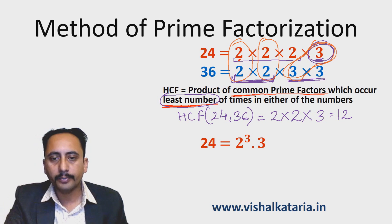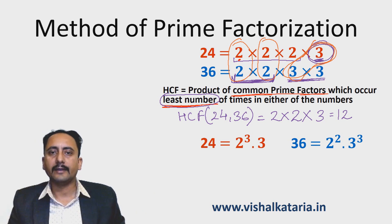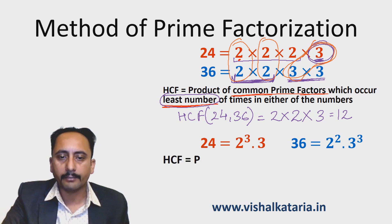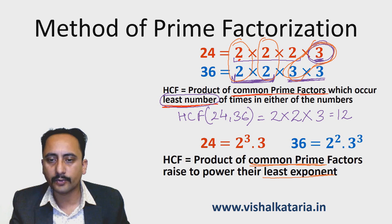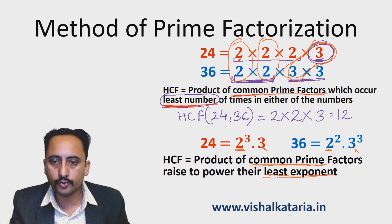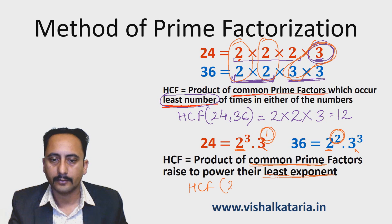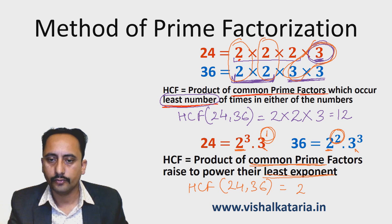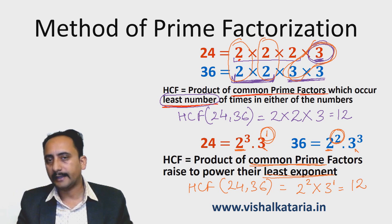In higher classes, 24 is written as 2³ × 3 and 36 as 2² × 3². It is also taught that the HCF of two numbers is the product of common prime factors raised to their least exponent. The common prime factors are 2 and 3. The least exponent of 2 is 2, and the least exponent of 3 is 1. So HCF = 2² × 3¹ = 4 × 3 = 12. Students can use whichever method they prefer.